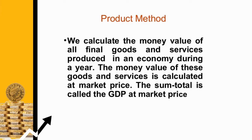Therefore we do not count the value of intermediate goods in national income, otherwise there will be a problem of double counting. To avoid this problem of double counting we use the value addition method. In the value added method, not the whole value of the commodity, but the value addition at each stage of final goods and services is calculated, and these are summed up to GDP.